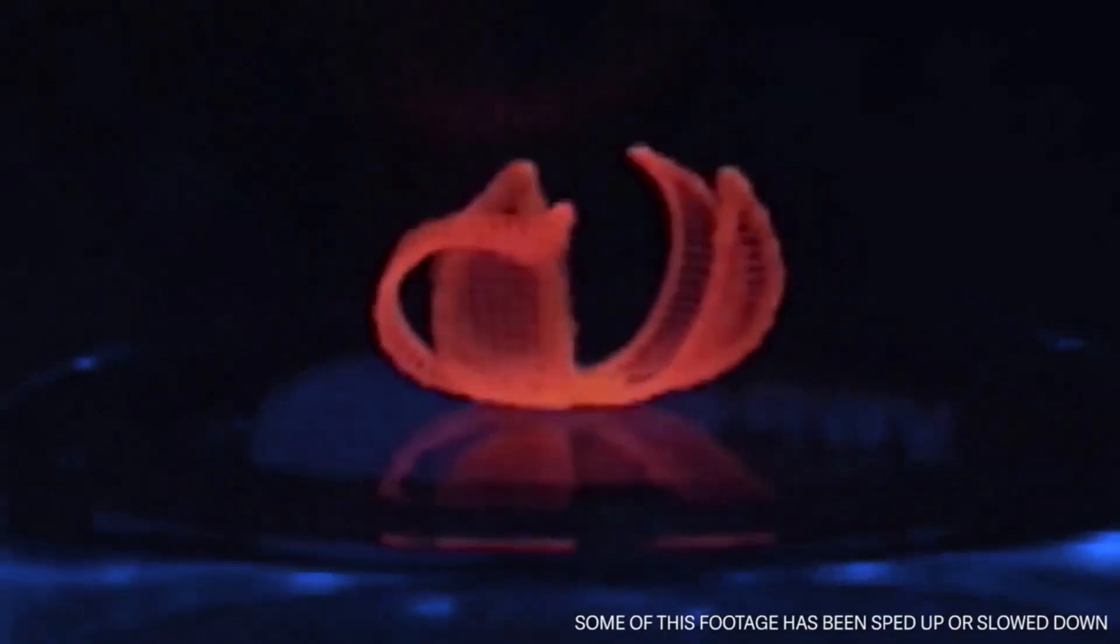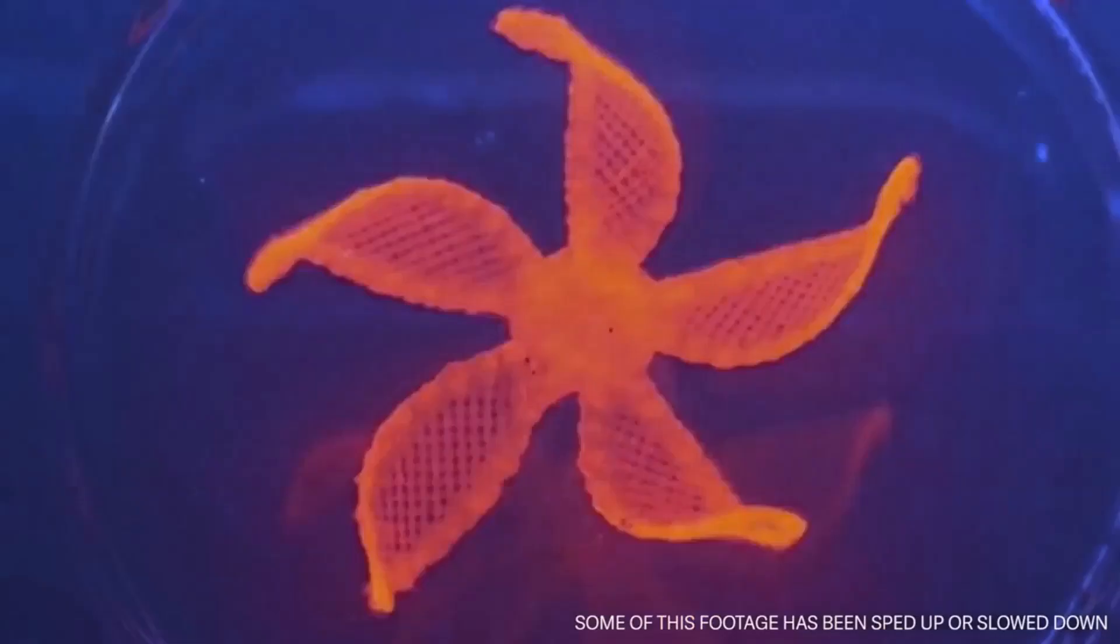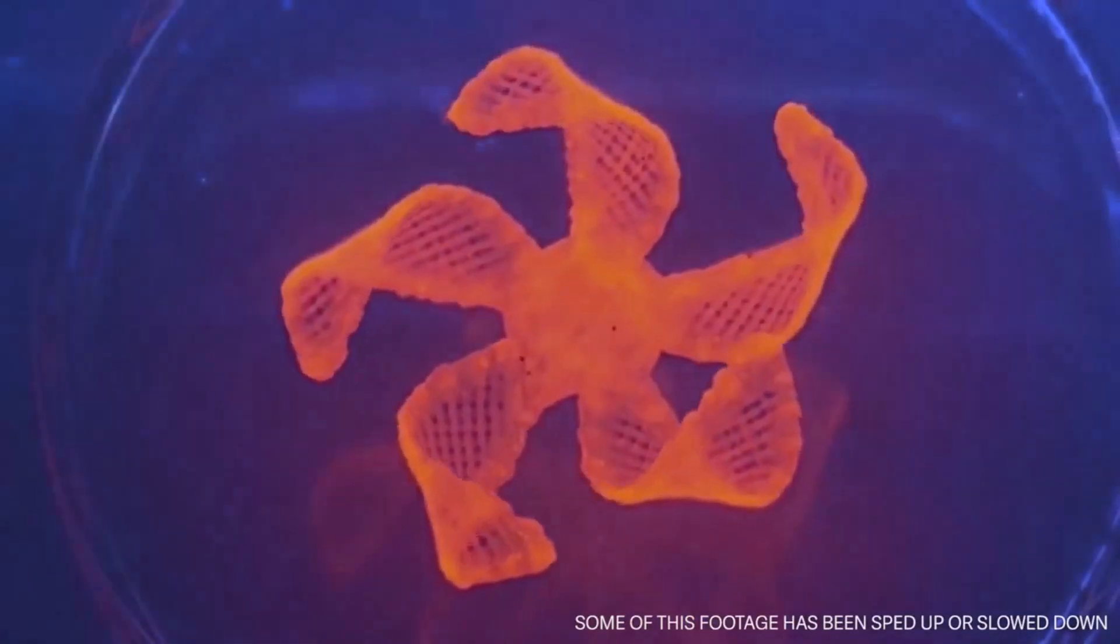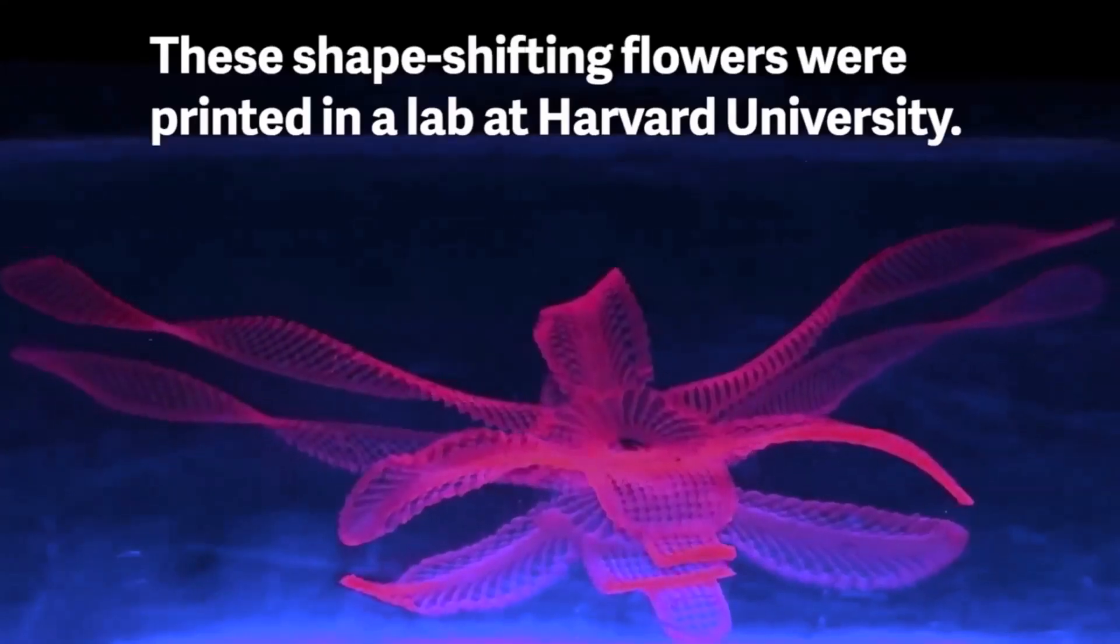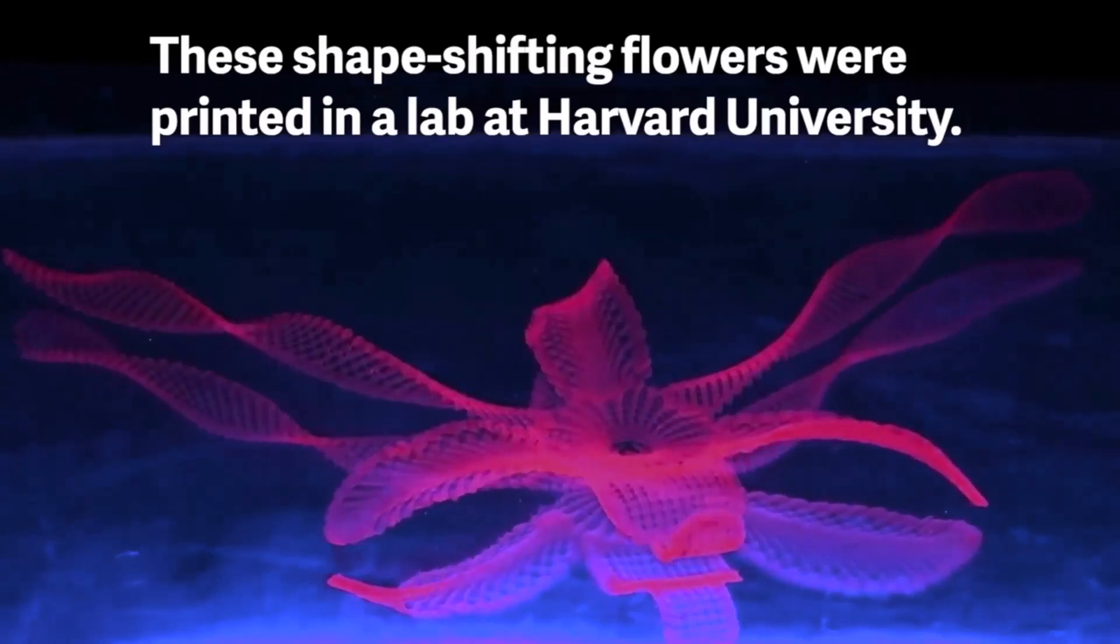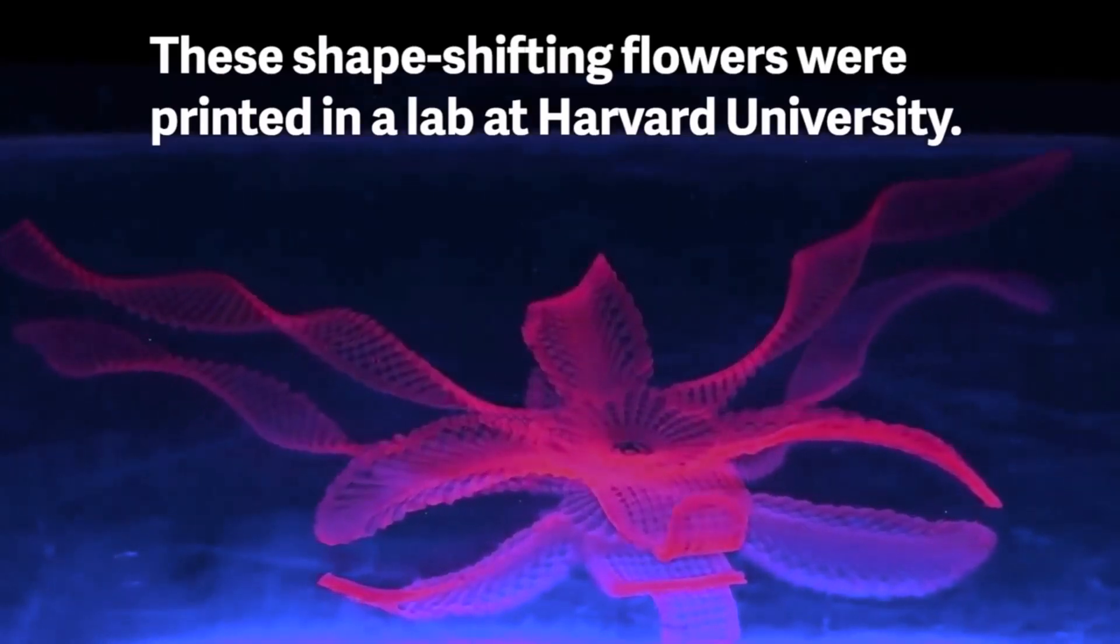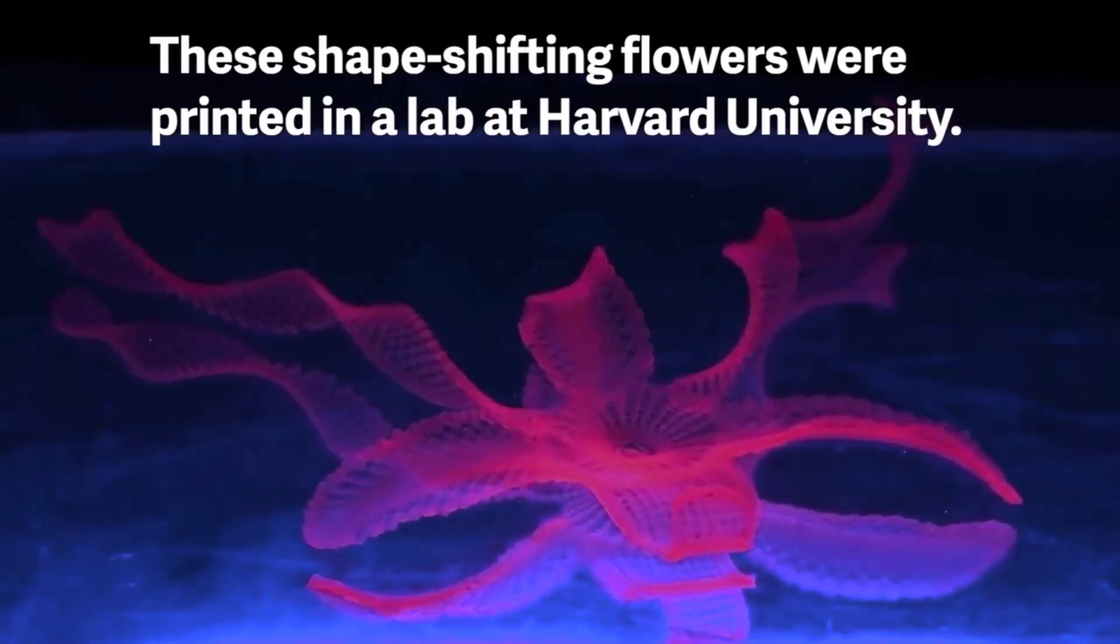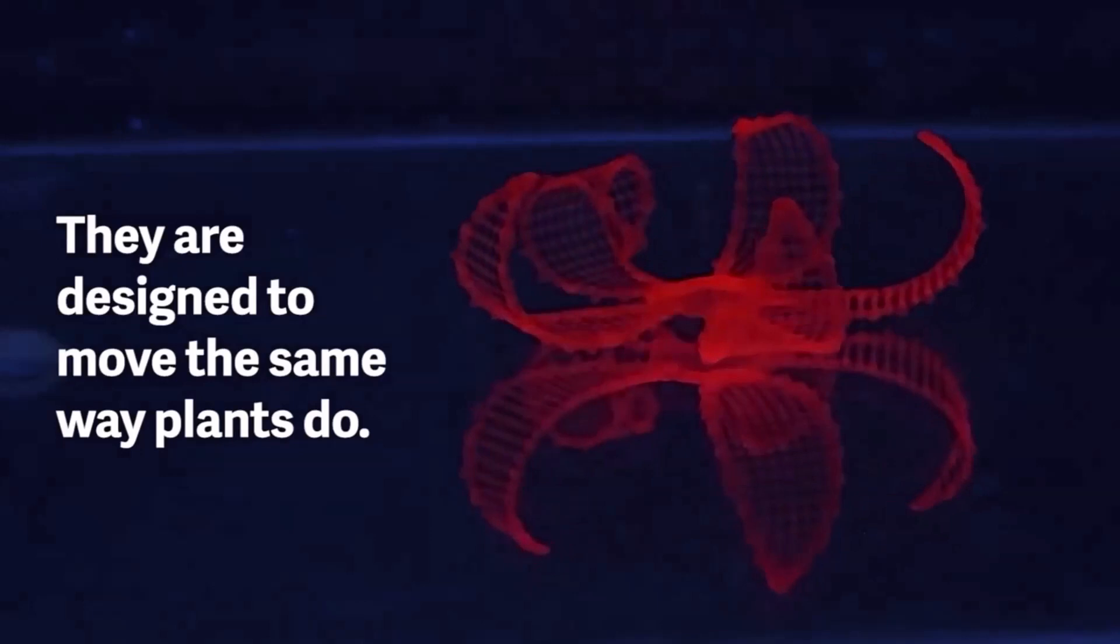The shape-shifting flowers were printed in a lab at Harvard University. They are designed to move the same way that plants do. A hydrogel swells in water and stiff cellulose fibers are placed in specific positions to control the shape as it swells.